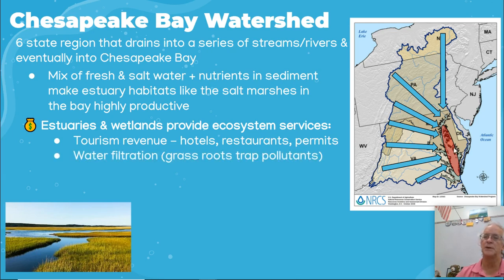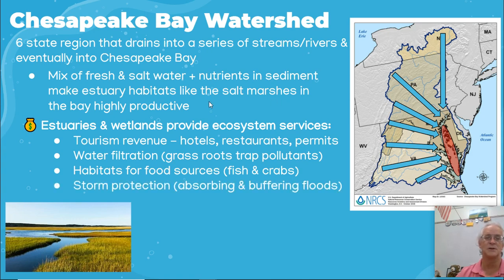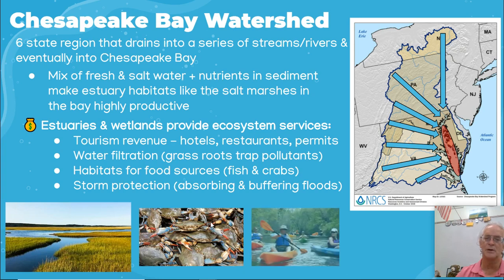Water infiltration makes it so there's more water going down into the groundwater. Why? Because the grass slows it down, but it also traps pollutants. There are habitats for food such as fish, crabs, birds, and ducks. Storm protection makes it harder for a hurricane or flood to cause damage, and there's crabbing and recreational activities people can enjoy out here.